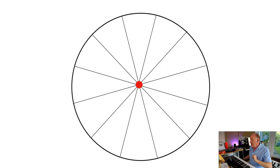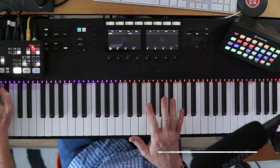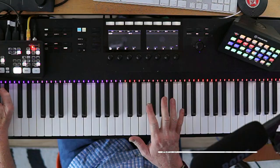Here is a circle. It's divided into twelve segments. Twelve is a magic number, because if you look at your keyboard, an octave is divided into twelve half steps.